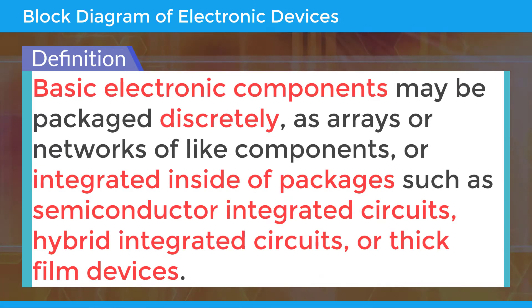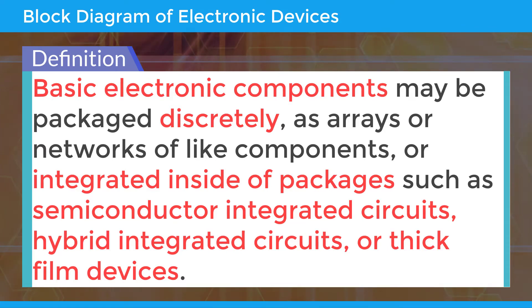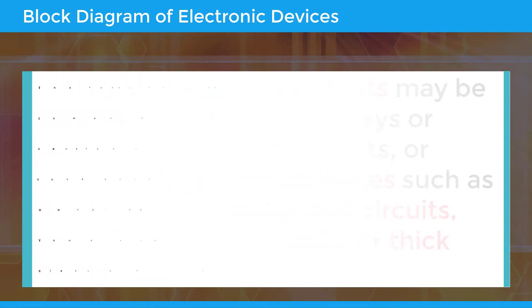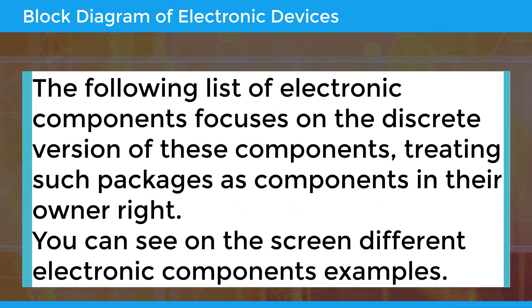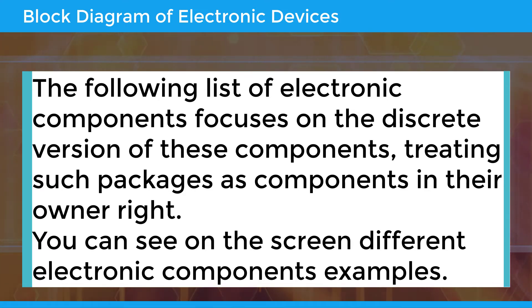Basic electronic components may be packaged discretely, as arrays or networks of like components, or integrated inside packages such as semiconductor integrated circuits, hybrid integrated circuits, or thick film devices. The following list of electronic components focuses on the discrete version of these components, treating such packages as components in their own right.